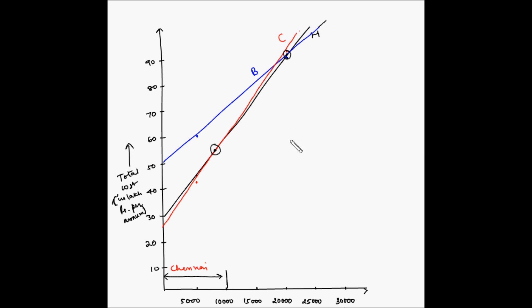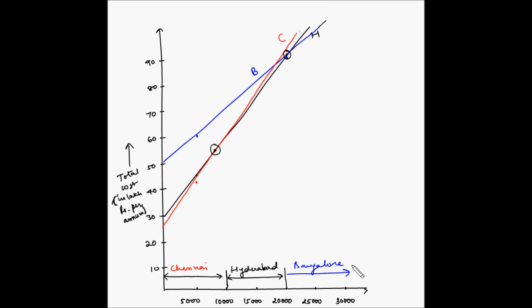The next intersection point is at 20,000 units. Between 10,000 and 20,000 units, the black line has the lowest cost, which is Hyderabad. Beyond 20,000 units, the blue line — Bangalore — is the lowest. So: from 0 to 10,000 units, Chennai is the lowest cost location; from 10,000 to 20,000 units, Hyderabad is the lowest cost location; and beyond 20,000 units, Bangalore is the lowest cost location.